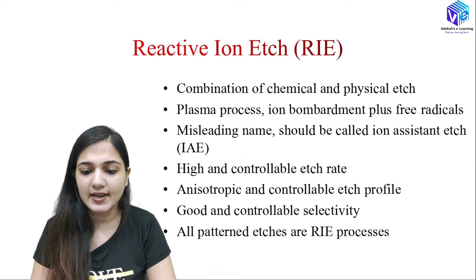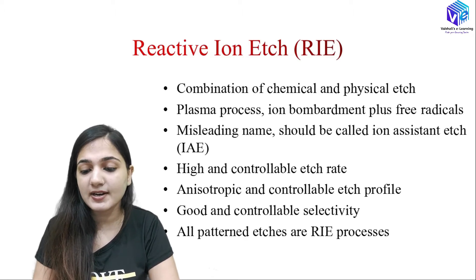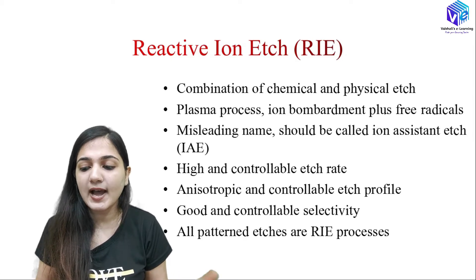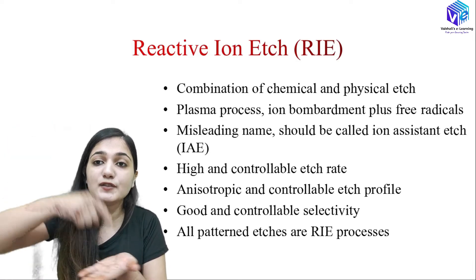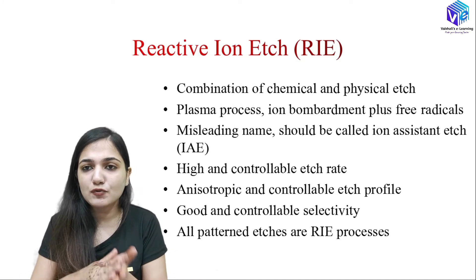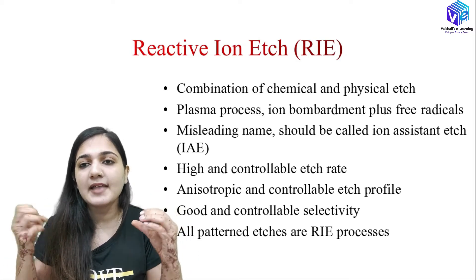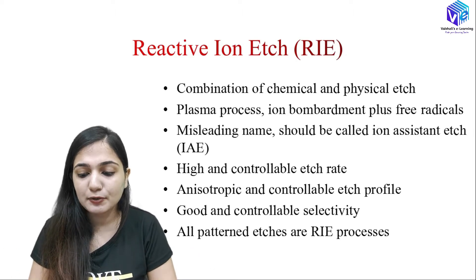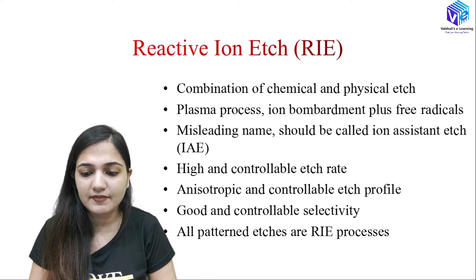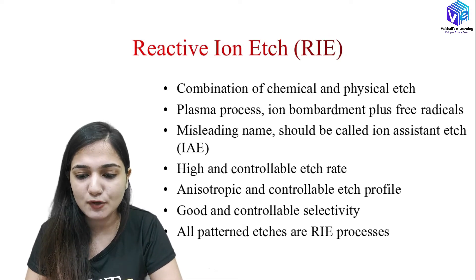Now coming to reactive ion etch, RIE. It is the combination of chemical and physical etching and is a plasma process with ion bombardment plus free radicals. Note that the name is somewhat misleading — it should really be called ion-assisted etch, because it uses chemicals whose reactivity is increased with the help of ions. Reactive ion etch produces a highly controllable etch rate, and we get anisotropic as well as controllable etch profiles and good, controllable selectivity. These are all key advantages of RIE.